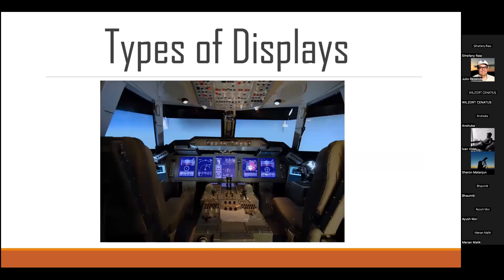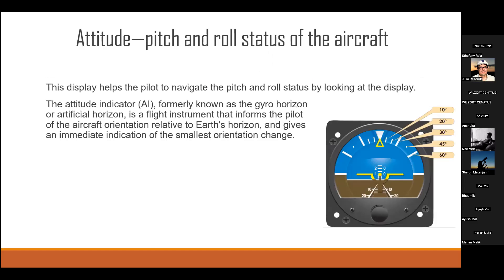The first type of display is the attitude display, which tells the pitch and roll status of the aircraft. As you can see in the image, this is the attitude display — the different angles indicate the angle at which the aircraft is tilted during roll and pitch. This display helps the pilot navigate pitch and roll status. The attitude indicator was formerly known as the gyro horizon or artificial horizon.